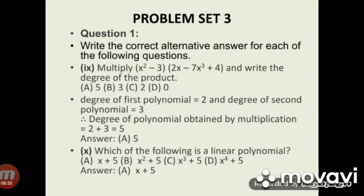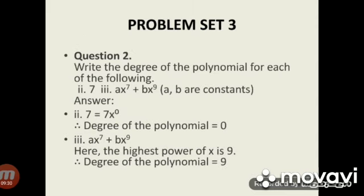Subdivision 9: Multiply (x squared minus 3) into (2x minus 7x cubed plus 4) and write the degree of the product. The degree of the first polynomial is 2 and the degree of the second polynomial is 3, so the degree of the product is 2 plus 3 equals 5. The answer is option A. Subdivision 10: Which of the following is a linear polynomial? The answer is x plus 5, because the degree of the variable x is 1.